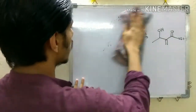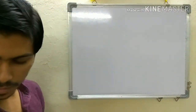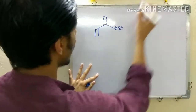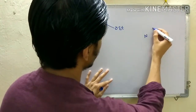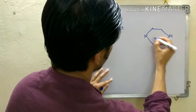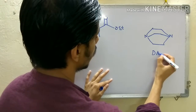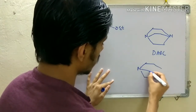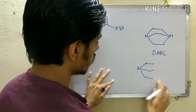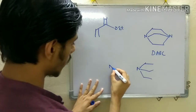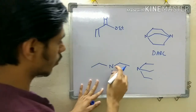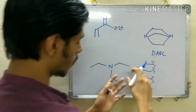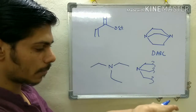Let's write down the mechanism. Here is your ethyl acrylate, and here is DABCO. If you compare DABCO with a normal tertiary amine with three ethyl substituents, you can see that the triethylamine will prefer to exist in a pyramidal form, but due to the steric hindrance of those three ethyl groups it will be flatter, though still pyramidal.